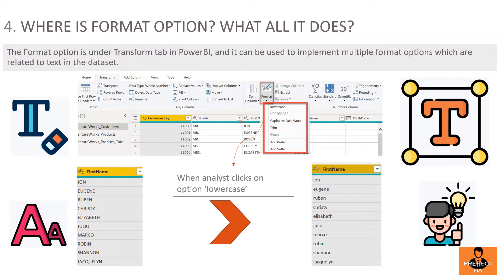Question number 4: Where is the Format option and what does it do? The Format option is under the Transform tab in Power Query Editor and can be used to implement multiple format options related to text in the dataset. It has options like Lowercase, Uppercase, etc. In the example shown, the first name is in uppercase, and by applying the Lowercase functionality under the Format option, it gets converted to lowercase. Other functionalities can similarly be applied as per business requirements.